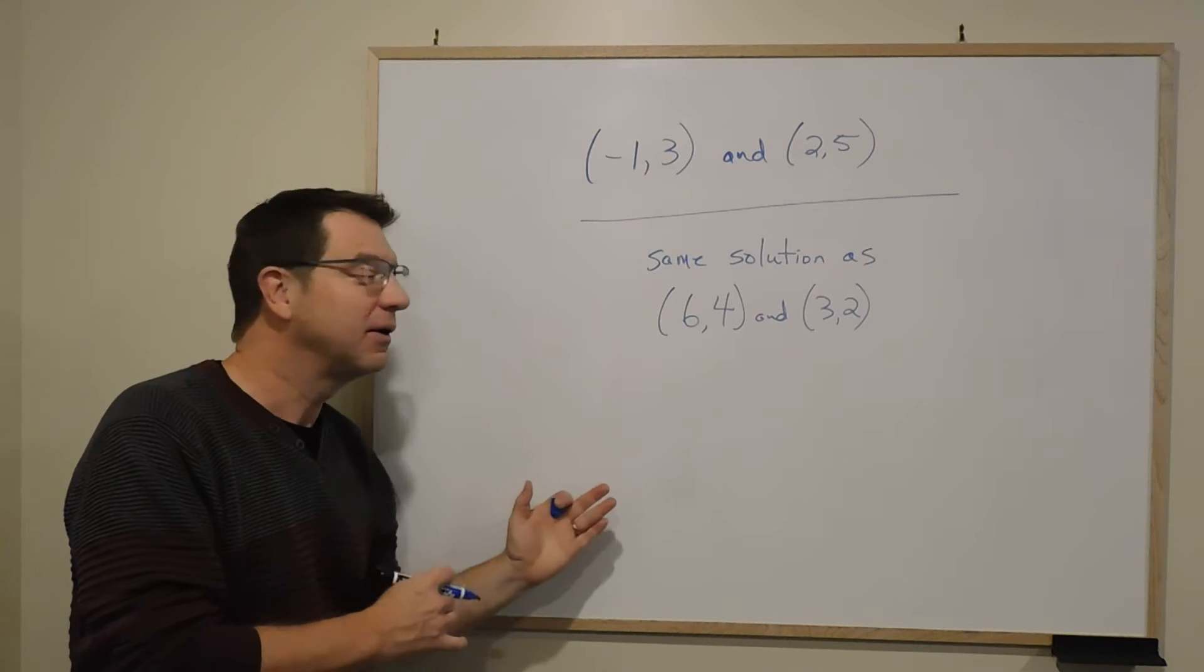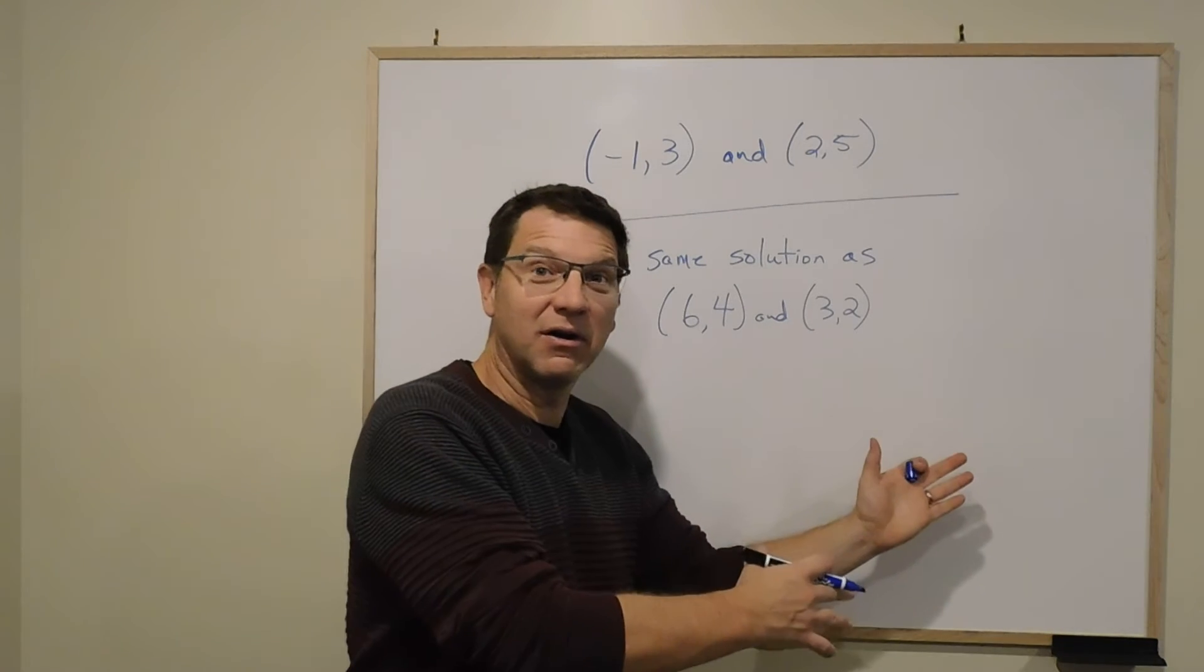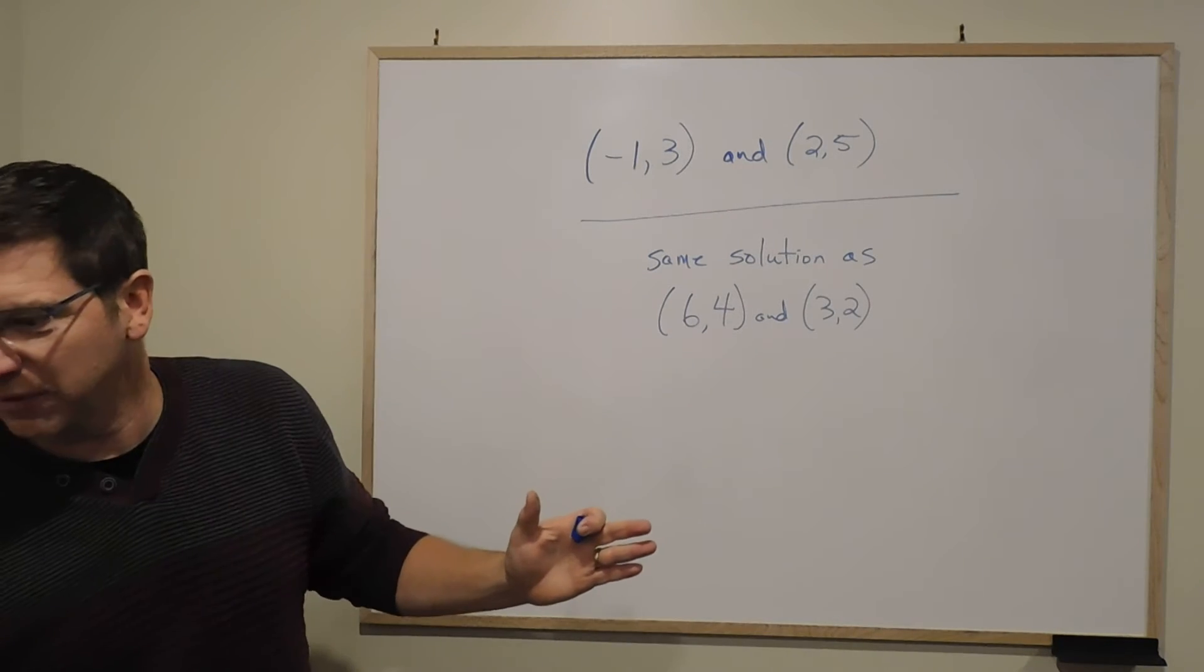We have to go and find the slope, and then we have to substitute in, and then we have to find b, and then we can get our equation. And when you look at it, that's what we've done is the steps.